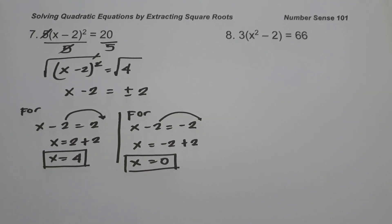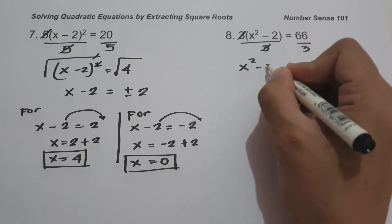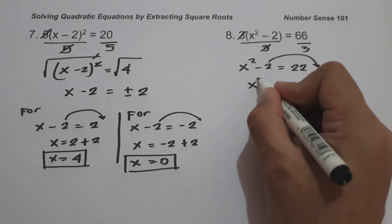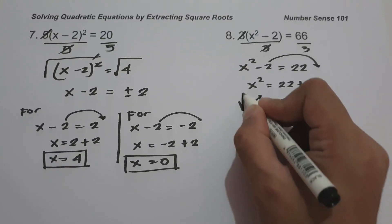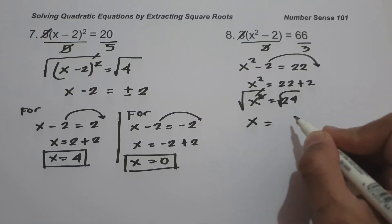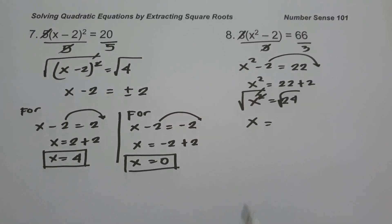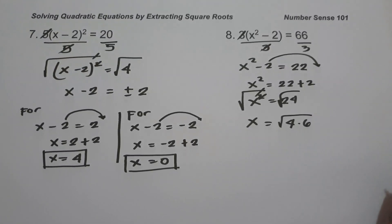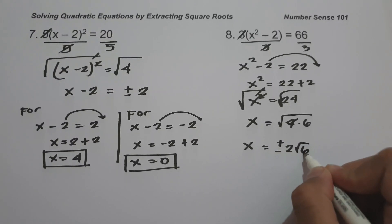On our last example, we have 3(x² - 2) = 66. To find the value of x, let us divide both sides by 3, giving us x² - 2 = 22. Moving negative 2 to the other side: x² = 22 + 2 = 24. Taking the square root of both sides, x is the square root of 24. Since 24 is factorable, we find 4 and 6, where 4 is a perfect square. So x = positive and negative 2 times square root of 6, and this will be our answer.